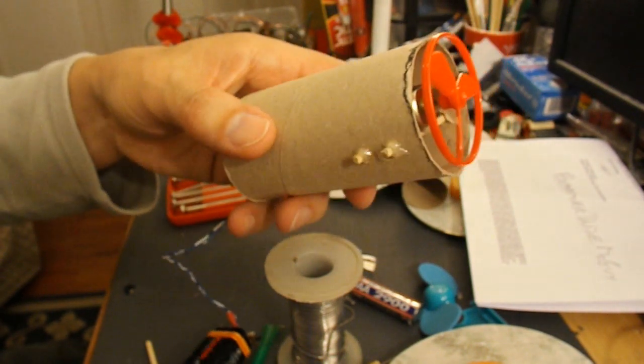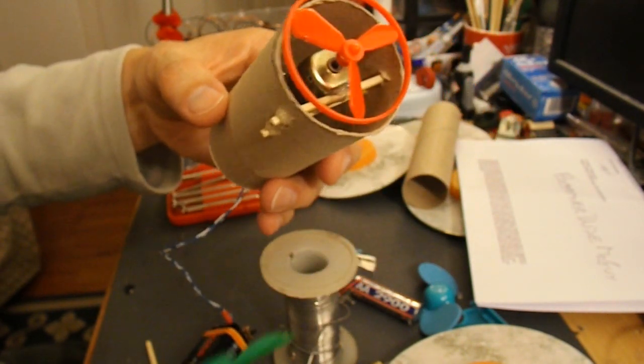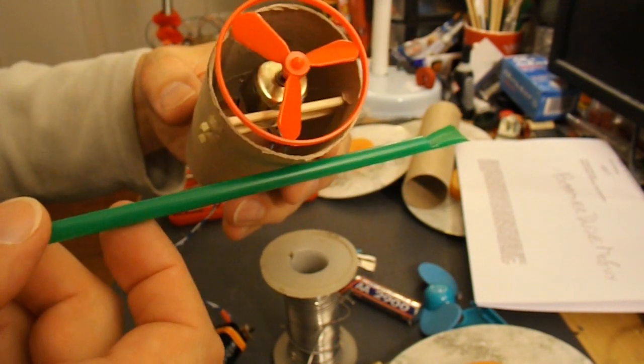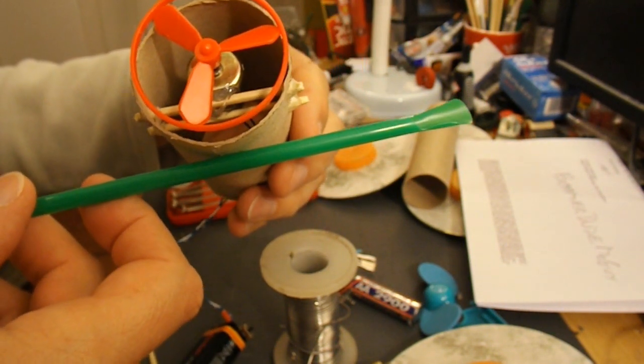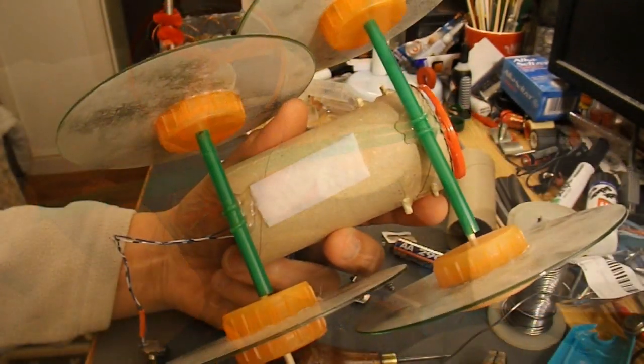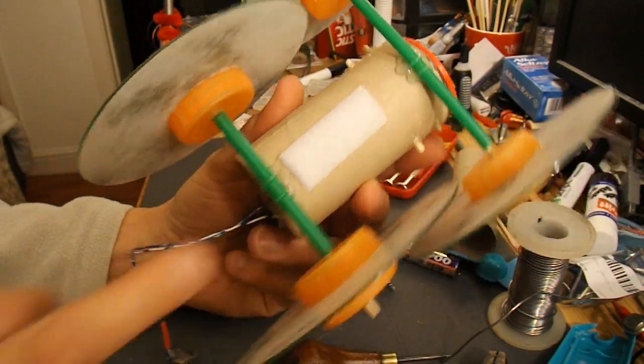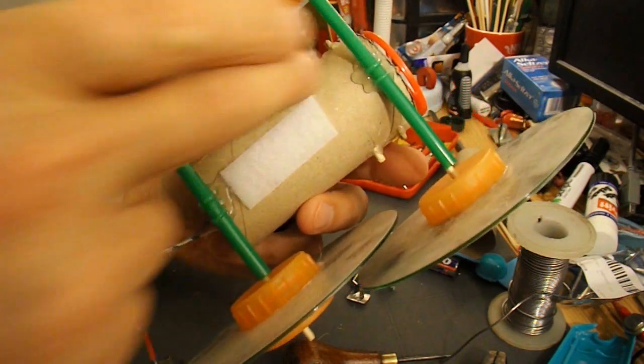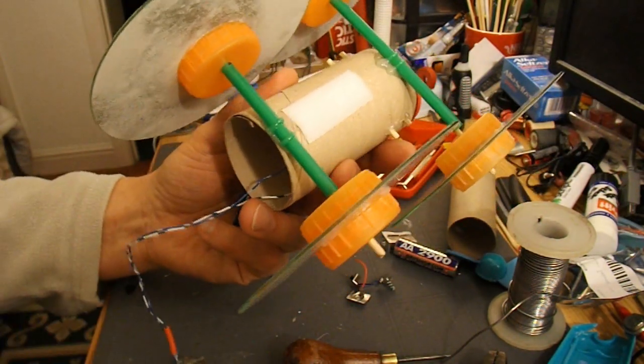So next we need to put the axle tubes on. I was going to put them through the middle, but I think I might just put them underneath. Might be easier. OK, there we go. Just drinking straws, hot glued onto the bottom of the tube.